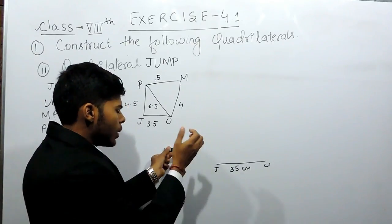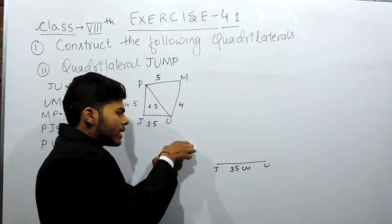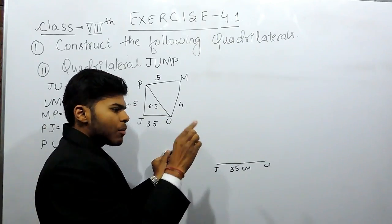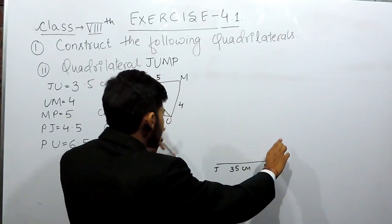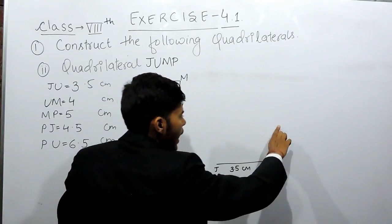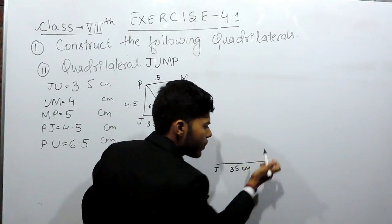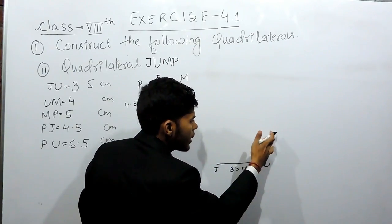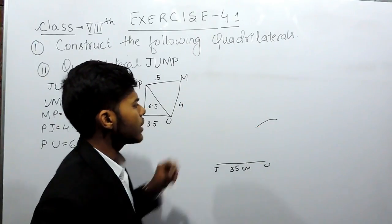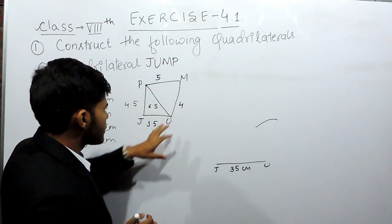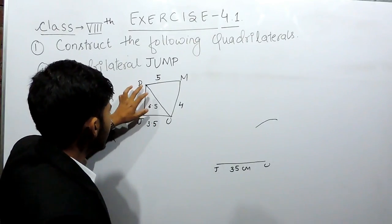Now for UM which is 4 centimeters — keep the ruler on the page, put the pointed end of the compass at 0 centimeters and open it to 4 centimeters. Put the sharp point of the compass at point U and cut an arc of 4 centimeters. This arc represents the 4-centimeter measurement for UM.